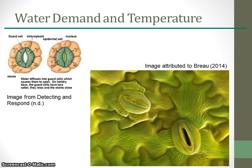The link between water demand and temperature influences plant adaptations. Terrestrial plants have evolved a range of adaptations to variations in precipitation and soil moisture, and the demand for water is linked to temperature. Plants have to balance the trade-offs of opening and closing stomata. When stomata are closed, there is a reduction in water loss, carbon dioxide gain, and evaporative cooling; however, photosynthesis rate declines and leaf temperatures rise.